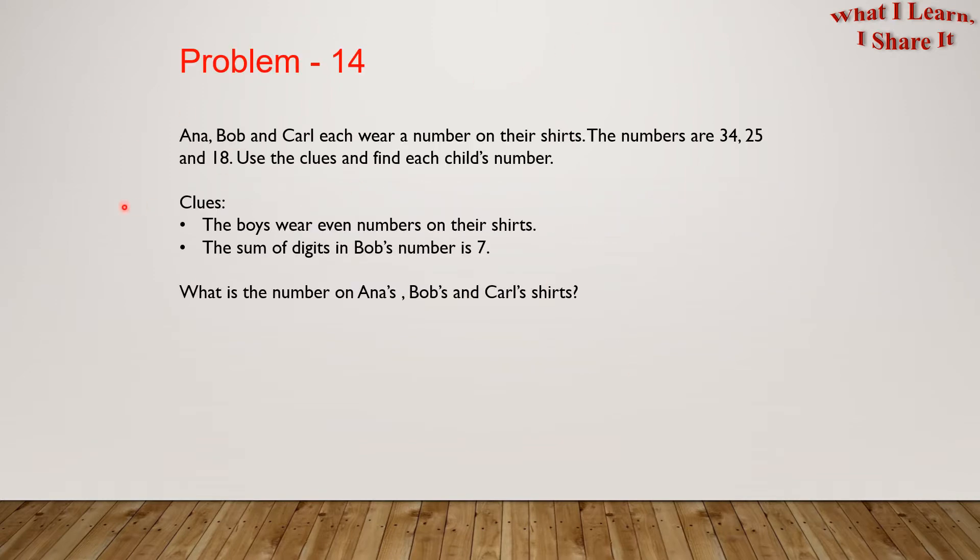We're doing problem solving for ages 6 to 7. Problem 14. Anna, Bob, and Carl each wear a number on their shirts. The numbers are 34, 25, and 18.